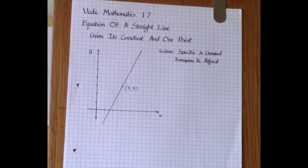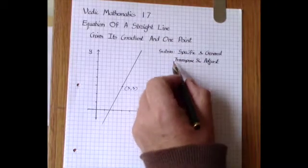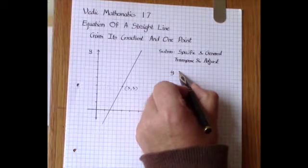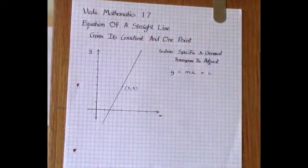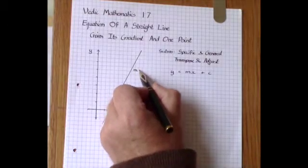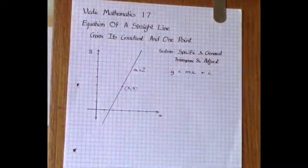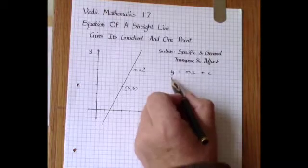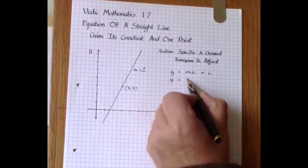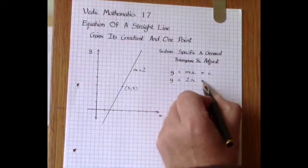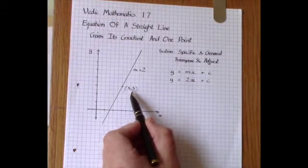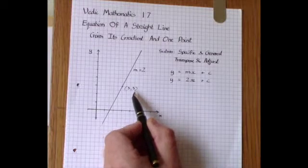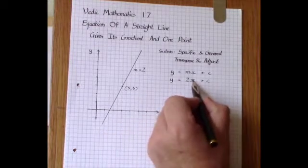The first conventional method uses the form y equals mx plus c and here we have a gradient 2. We substitute in the gradient 2 here so we get y equals 2x plus c.